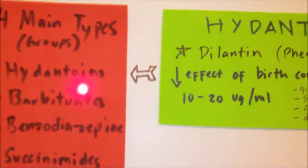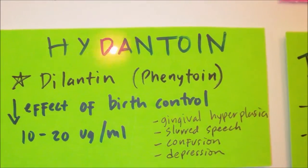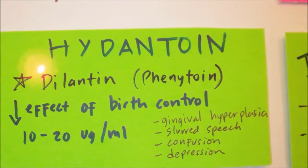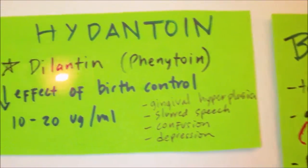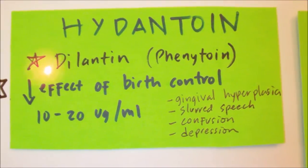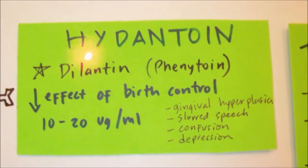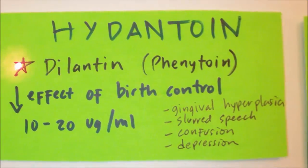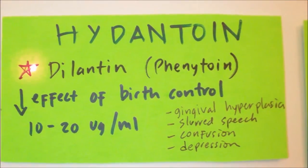Let's first talk about hydantoins. Obviously, these are used to treat seizures. The major NCLEX medication in the group of hydantoins is phenytoin or Dilantin. Dilantin is used to control certain types of seizures, and it's also used to treat and prevent seizures that may begin during or after a surgery to the brain.